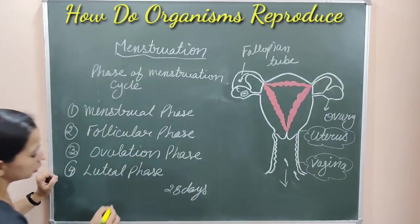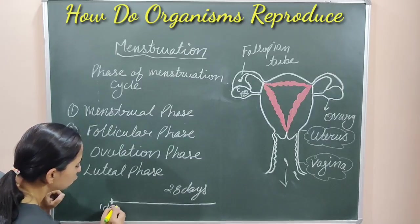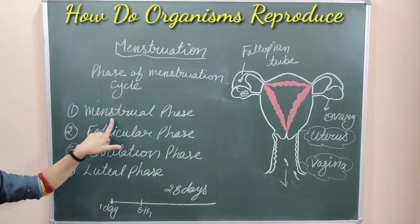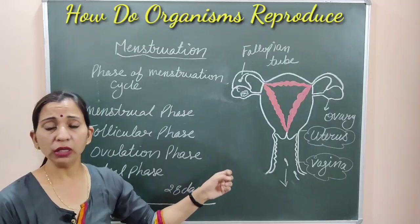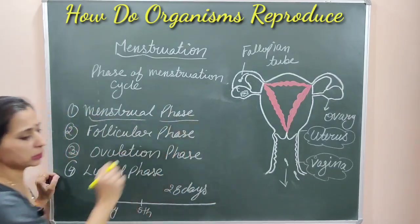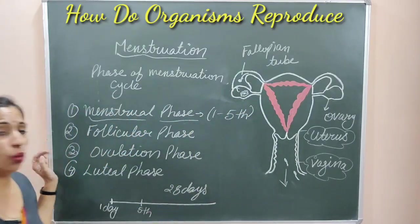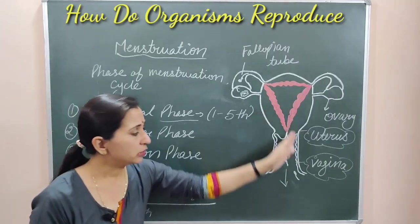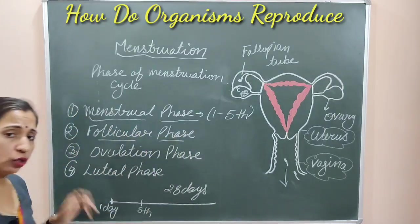From the first day to the fifth day, this phase is known as the menstrual phase. This is the phase in which the inner lining of the uterus with the unfertilized egg and blood comes out. This is the menstrual phase — in the 28-day cycle, from day 1 to day 5 there is bleeding, and these things come out through the vagina.